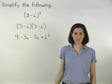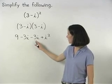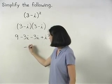Next, we combine our like terms. Negative 3i minus 3i is negative 6i.